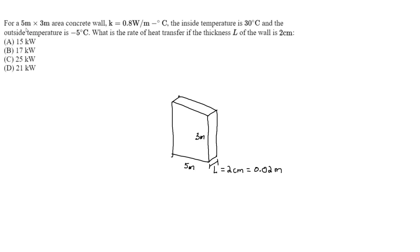So that's that. This is our wall. We know this wall is made of concrete, and our k value for the wall is going to be 0.8 watt per meter degree Celsius. We're told that inside temperature is 30 degrees Celsius, outside temperature is negative 5.